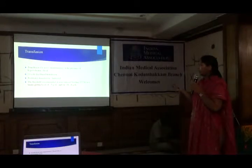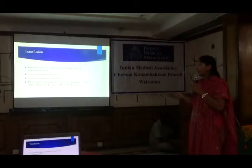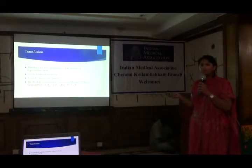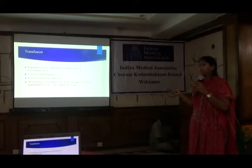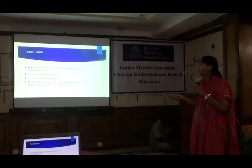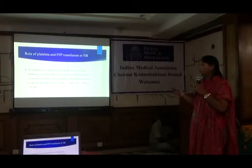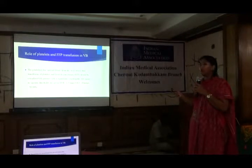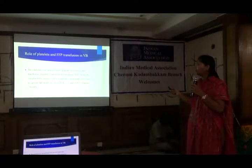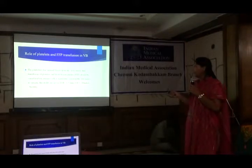For transfusion thresholds: in non-variceal bleed, transfusion should be done only when hemoglobin is less than 7 grams. In variceal bleed, transfusion is indicated when hemoglobin is less than 8 grams; if it is more than 8 grams, transfusion is not needed. For FFP and platelets, the threshold is an INR more than 1.5 times the normal limit or platelet count less than 50,000.